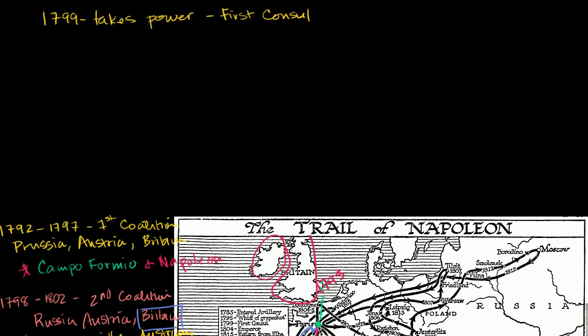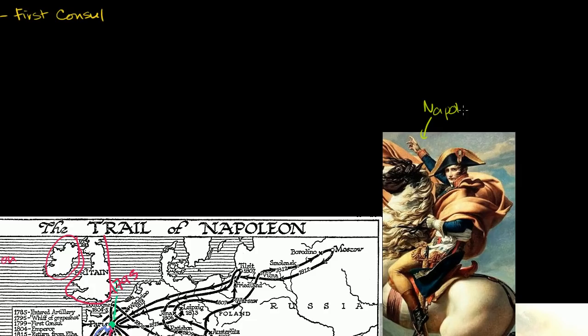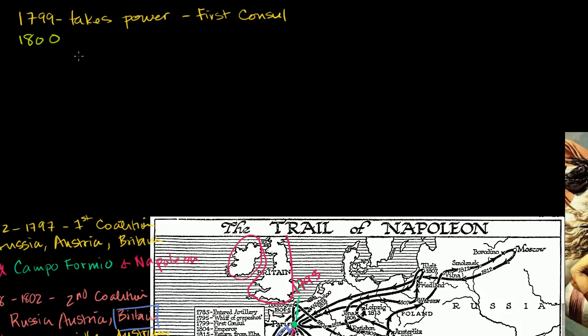In 1800, remember when he took power, we were still in the War of the Second Coalition. France had lost ground — they had lost a lot of what they had gained in the First Coalition. In Italy, the Austrians had taken it back. So Napoleon decides to take charge, cross the Alps. This is a picture of Napoleon crossing the Alps, leading the troops to take back what he felt needed to be taken back from Austria.